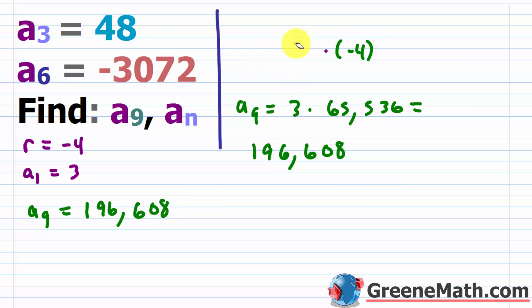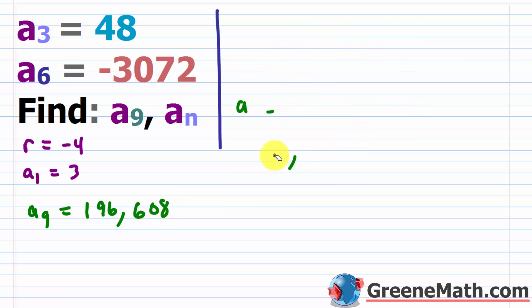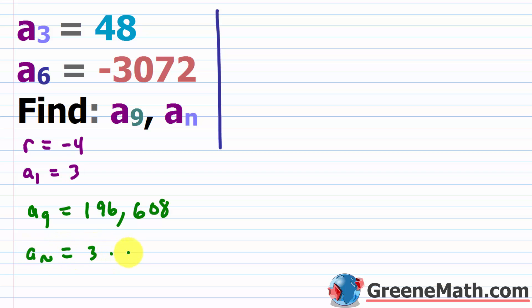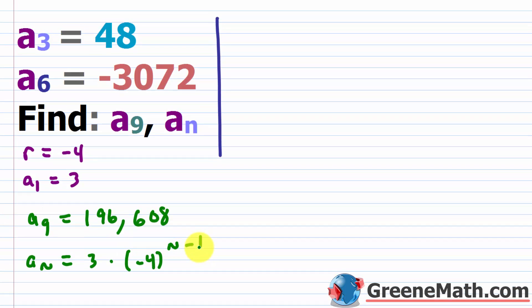For a sub n, it's straightforward: a sub n equals 3 times negative 4 raised to the power of n minus 1.